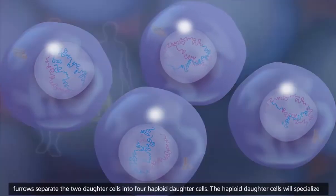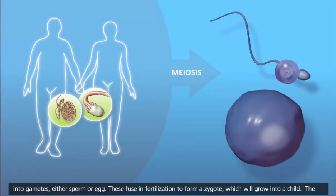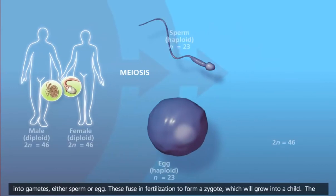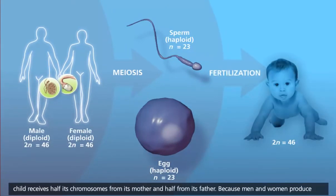The haploid daughter cells will specialize into gametes, either sperm or egg. These fuse in fertilization to form a zygote, which will grow into a child. The child receives half its chromosomes from its mother and half from its father.